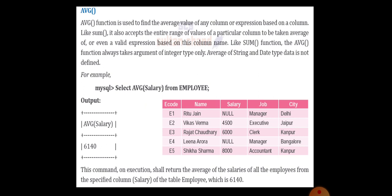Coming to the average function, average function is used to find the average of any value in a column. Like SUM, it also accepts the entire range of values of a particular column to be taken average of, or even a valid expression based on this column name. The average function always takes argument of integer type only. The string type and the date type data is not defined yet. Look at the average salary that is given. For Ritu Jane, it is null. For Lena Arora, it is null. So what will be the average salary? How the count happens?